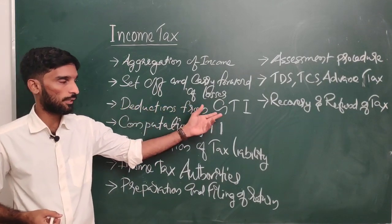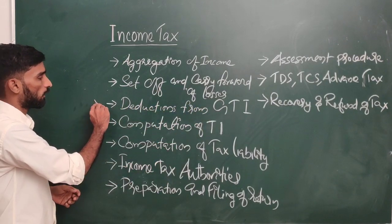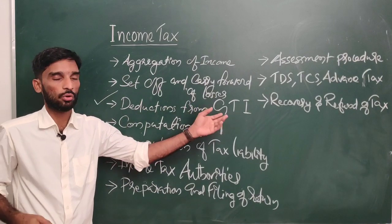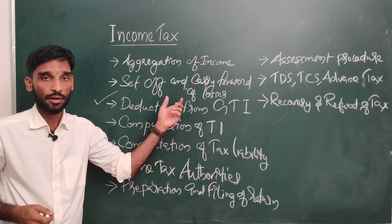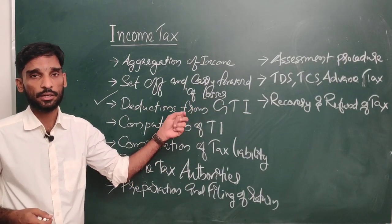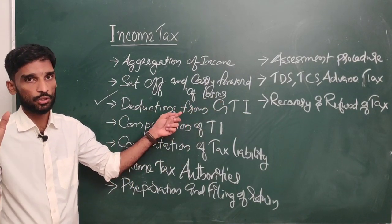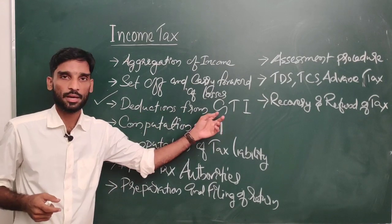We will cover deductions from GTI — Gross Total Income — deductions under Chapter 6A, from 80C to 80U.